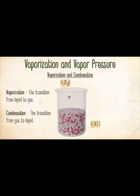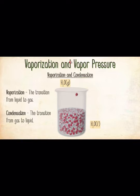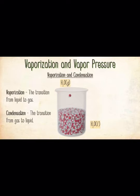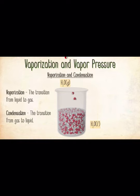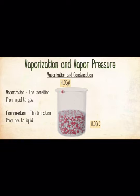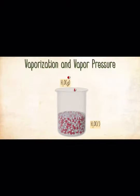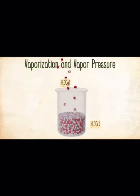In a beaker open to the atmosphere, vaporization and condensation both occur. However, under normal conditions — relatively dry air at room temperature — vaporization occurs at a greater rate than condensation because most of the newly vaporized molecules escape into the surrounding atmosphere and just never come back. As a result, you see a noticeable decrease in the water level over several days. Increasing the temperature increases the motion of the molecules, which results in a faster rate of vaporization.